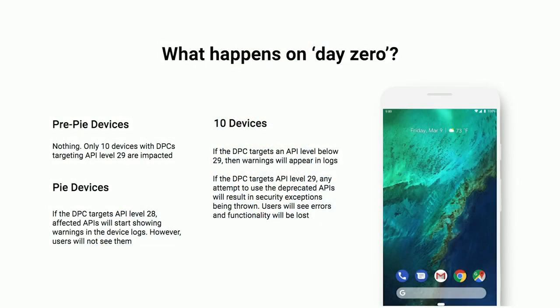So what does that specifically mean for your existing devices managed with device admin APIs? For any devices upgraded to Android 10 or shipped with Android 10, if your EMM's DPC targets an API level before 29, end users will not experience any change in behavior and IT administrators will be able to manage devices as expected. When the EMM's DPC targets API level 29, while you won't lose complete management of the device, IT administrators will lose the ability to require a secure device passcode, block the camera, and control lock screen settings. Additionally, users will see error messages on the device if those APIs are called.